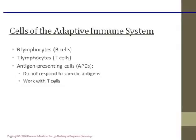Then the cytotoxic T cell will kill the entire infected cell straight out. APCs are just macrophages — they're nonspecific in that case. They just eat whatever's foreign. It doesn't need to be a specific shape the way an antibody needs a match.